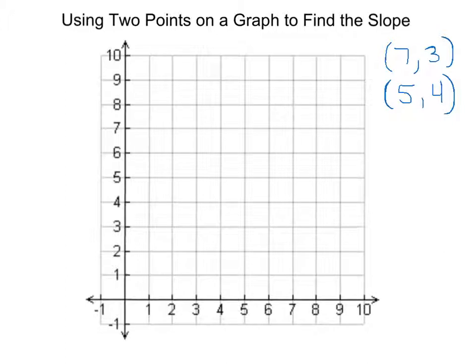Alright, here's one more practice problem. I want you to go ahead and do the same thing as we did before. You need to plot the points, draw your line connecting the points, and find your slope. When you're done finding your slope, make sure you determine if it's a positive slope or a negative slope and show that by either adding the negative sign or leaving the fraction as is.